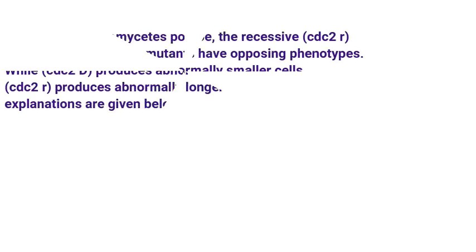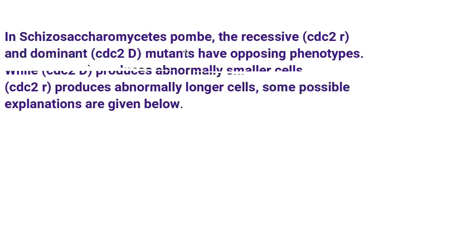For example, we studied everything about cell cycle regulation — we know what is CDC 25, V1, CDC 2, etc. Just read the following question. After reading the question, there is a chance — it also depends upon us. Some of us can answer, but others need to do three readings. At the time of examination, we don't have time to waste.